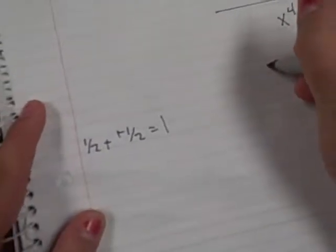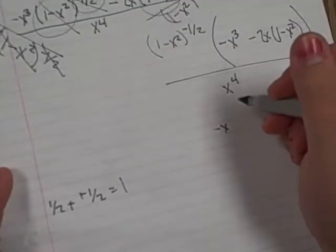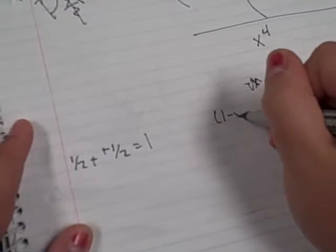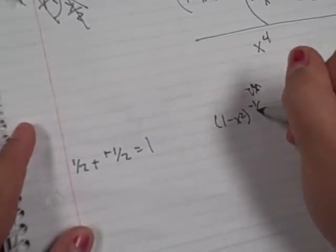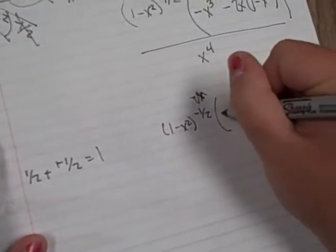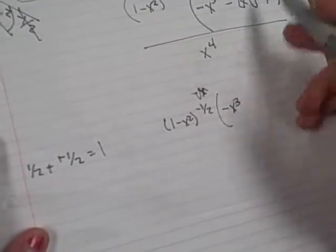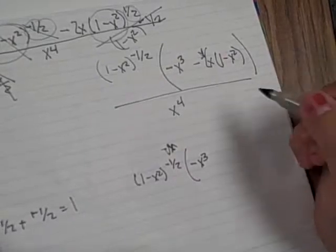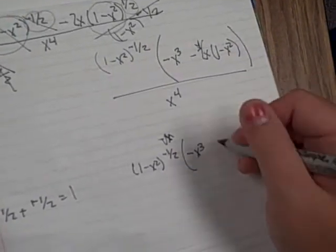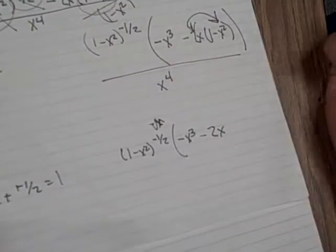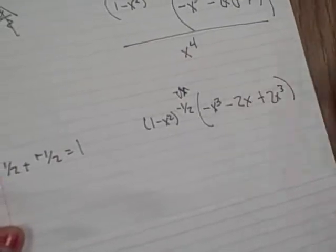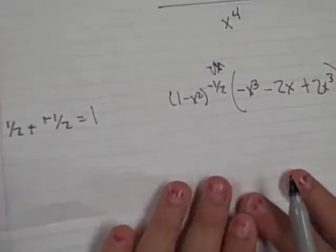So you're left with negative x—oh I'm sorry. You take this stuff again and you write that out, so it's 1 minus x squared to the negative half, and then you have negative x cubed and you're distributing the 2. So negative 2x times 1 is negative 2x, and then you distribute it over here. So that leaves you with a positive 2x cubed. Are you with me so far? I hope so.